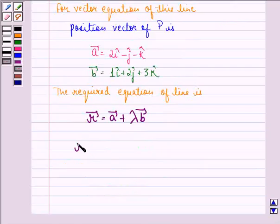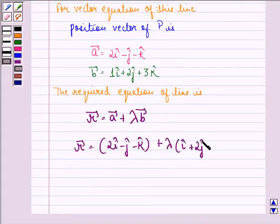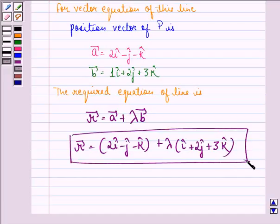Hence, vector R equals (2i cap minus j cap minus k cap) plus lambda times (i cap plus 2j cap plus 3k cap). This is our answer to the second part.